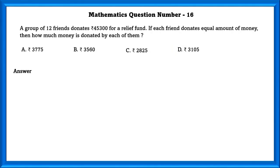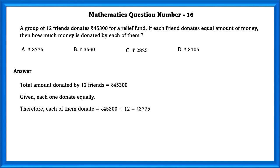Mathematics question number 16. A group of 12 friends donates 45,300 rupees for a relief fund. If each friend donates an equal amount, how much money does each one donate? Each of them donated 45,300 divided by 12, which equals 3,775 rupees.